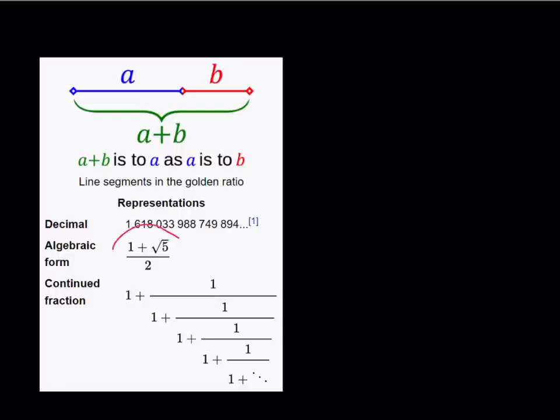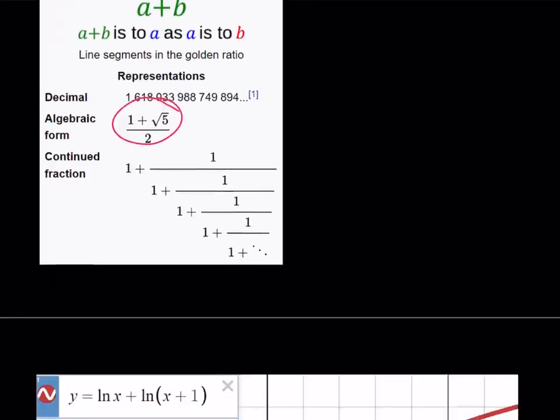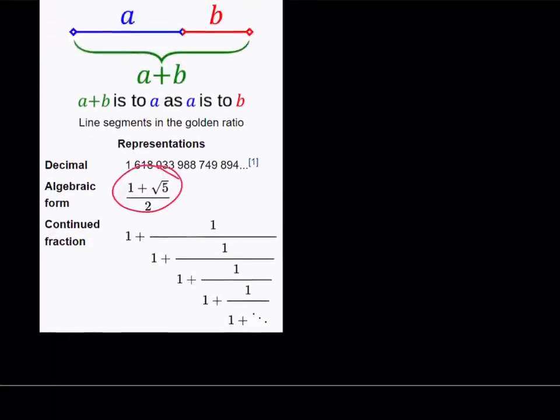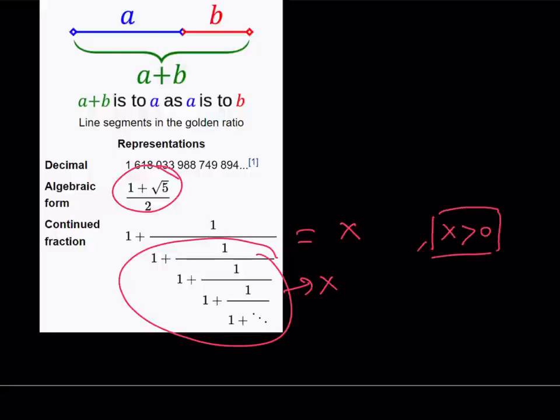But not only that, if you look at the continued fraction, that is also crazy because take a look at it. It's just made up of 1s, right? But it is the golden ratio. If you go ahead and set this equal to x and the whole thing is going to become x, and then if you solve this, you're going to get the same equation. But obviously, in this case, x is positive. Therefore, you're going to end up with golden ratio. Amazing.